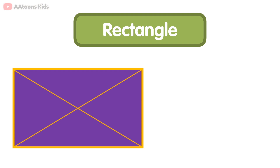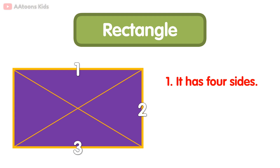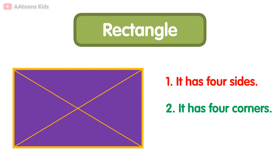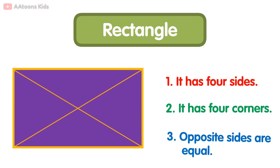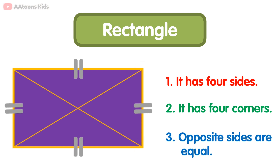Rectangle. It has four sides: one, two, three, four. It has four corners: one, two, three, four. Opposite sides are equal.